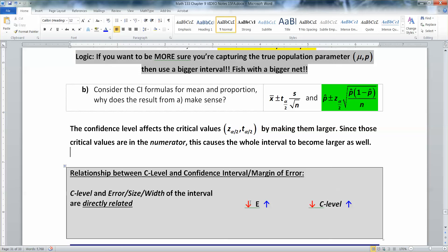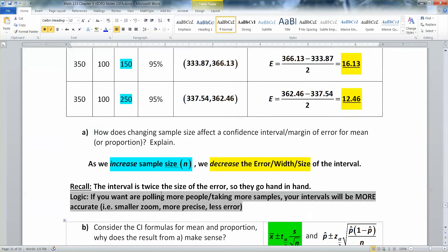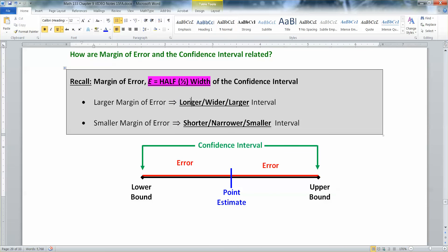They go hand in hand. So, confidence level, margin of error are directly related. And I gave you little symbols here. So, when one goes down in red, the other goes down in red. When one goes up in blue, the other goes up in blue. They go hand in hand, as does the interval itself, right? So, that's why I have error and size and width, because remember, the size and the width is all directly relational as well, right? Because all it is, is the error is half the width, or the width is twice the error, whichever way you want to think about it.